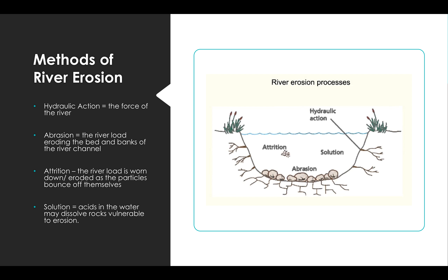The fourth method is attrition, and this is slightly different because it's eroding the river load itself only. It's not actually causing any feature to form — it's just rounding out the stones. They start as sharp, jagged stones in the youthful stage of the river, and as they're transported downstream to the old age stage, they become more rounded because they bang off each other and get rubbed down.